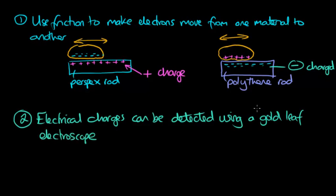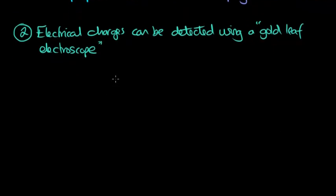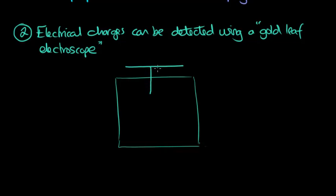Which is a very fancy name. And let's see if I can show you what it looks like. So you have a case. We have a metal top plate. And that metal has a kind of stem which goes into the casing. And we have a gold leaf which is attached to the stem.